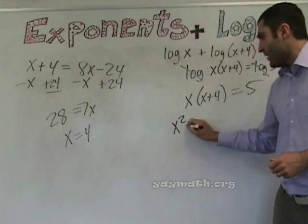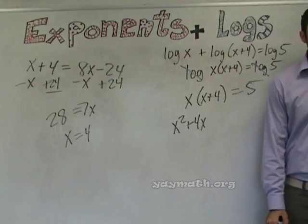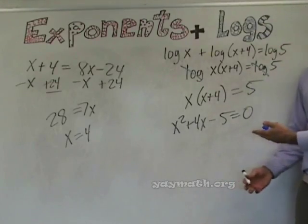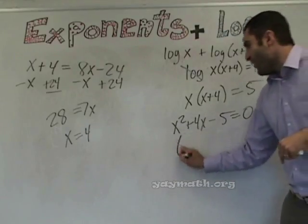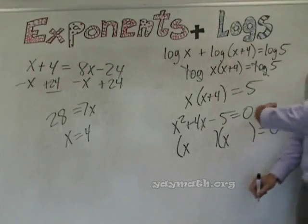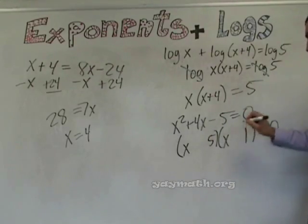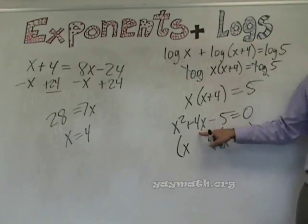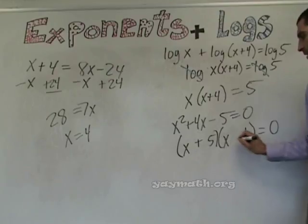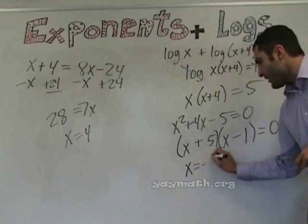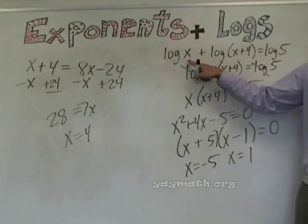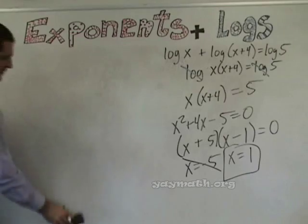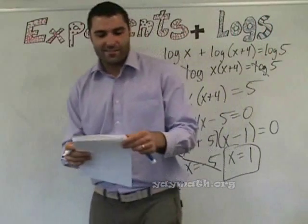We continue: x squared plus 4x minus 5 equals zero. Factor — factor is your friend. We need factors of negative five that add to positive four: positive five and negative one. So we have x equals negative five and x equals one. Can logs be negative? No, logs may not be negative. So x equals one is the answer.